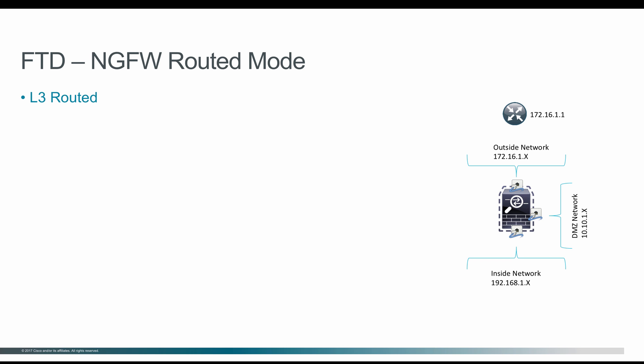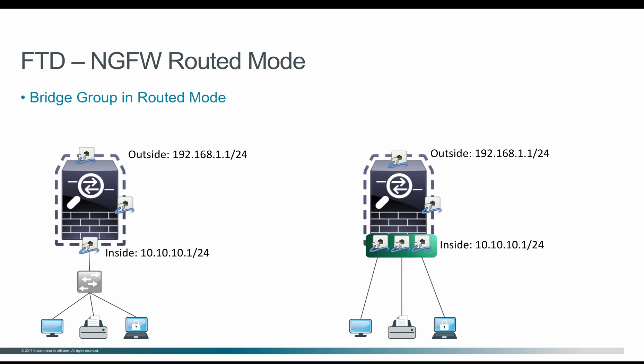Apart from routed, you can also enable bridge group on the routed mode. What that means is when you have a firewall and you have fewer devices that need to be connected — for example, in a scenario where you need three PCs, a printer, and another laptop connected to a Firepower Threat Defense — you would normally need a switch between the FTD and all those devices.